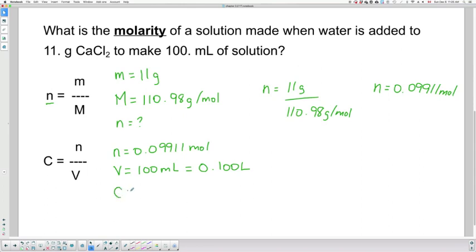So 0.100 liters. And I'm looking for the concentration of this mixture. So my concentration is equal to 0.09911 mole divided by my volume of 0.100 liters. My concentration would be 0.9911 mole.